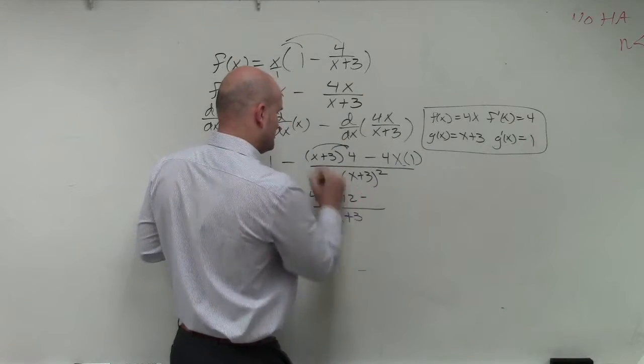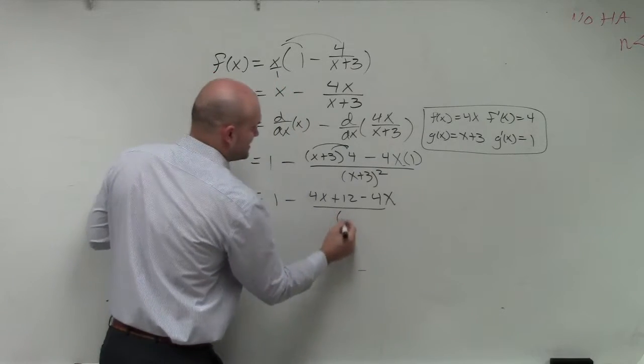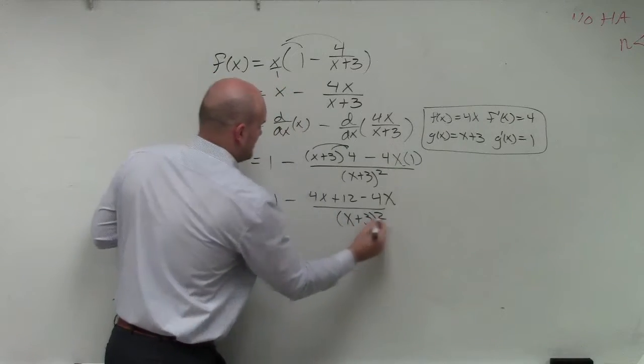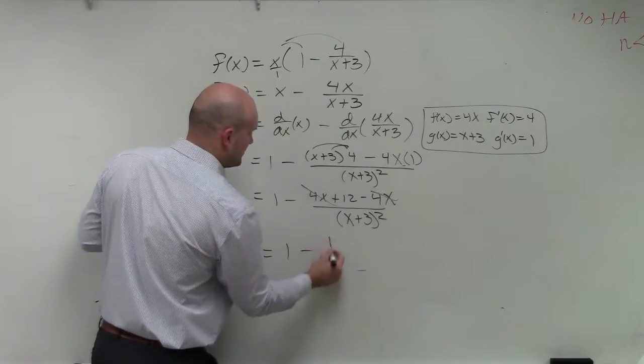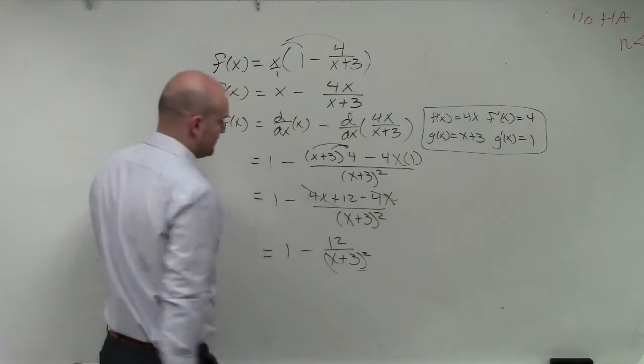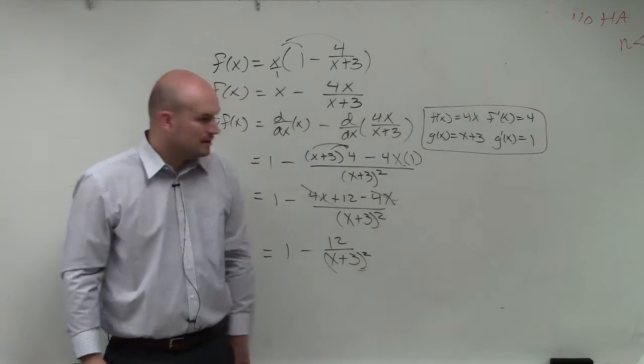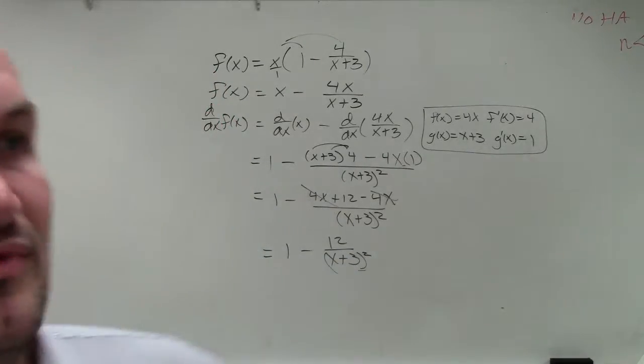So therefore, distribute that, and then that's 4x over x plus 3 squared. 1 minus, you can see that those divide out. We're left with 12 over x plus 3 squared. I'm not going to combine or simplify any further, but that'd be the simplified form.